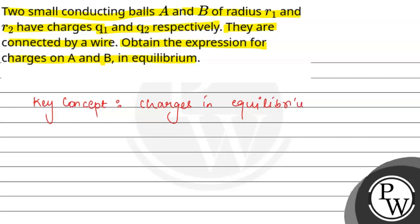We have two small conducting balls A and B. Ball A has radius R1 and ball B has radius R2. Initially, ball A is charged Q1 and ball B is charged Q2. In equilibrium, we have connected them with a wire, so some charge will flow from one sphere to another.